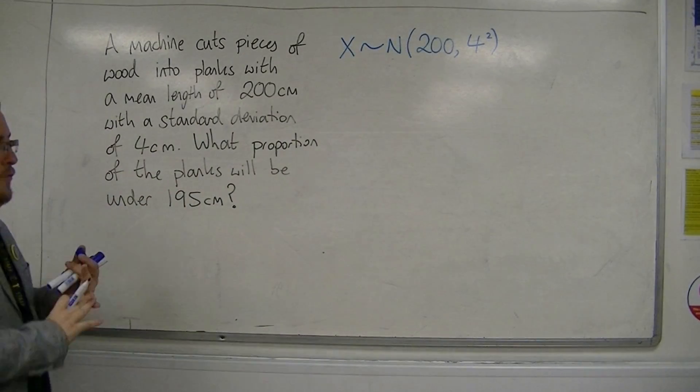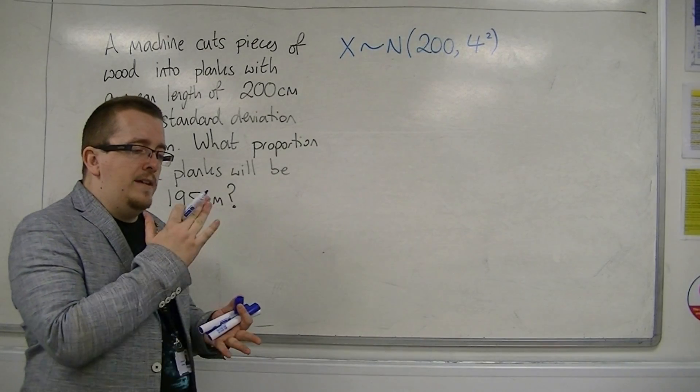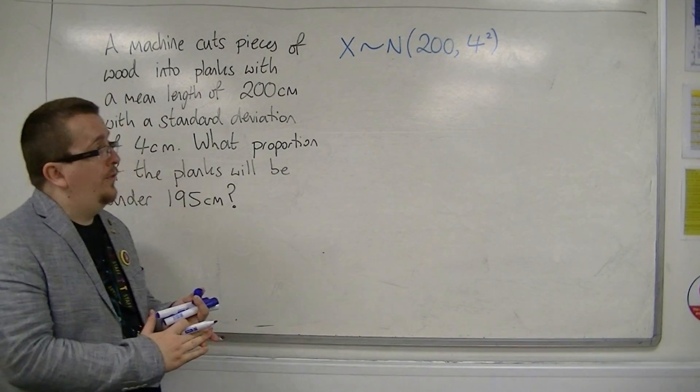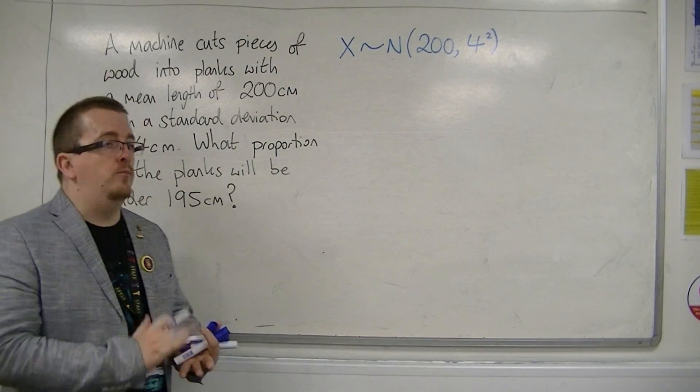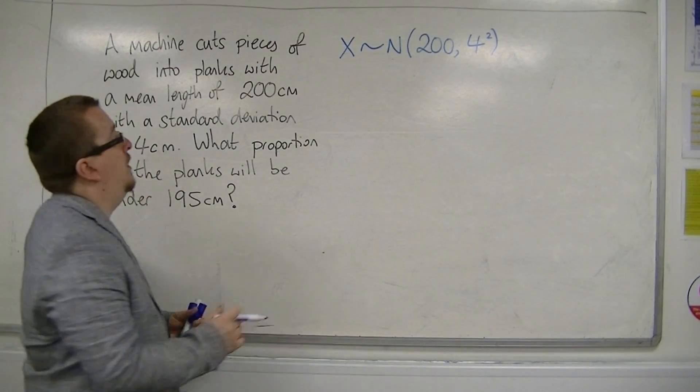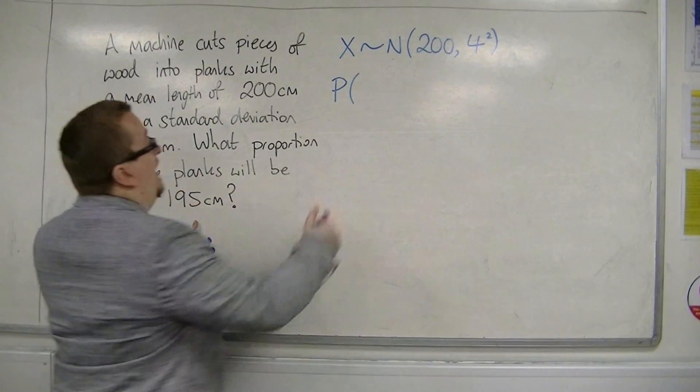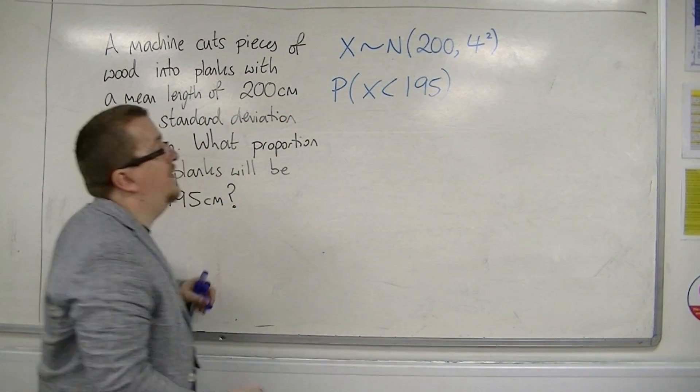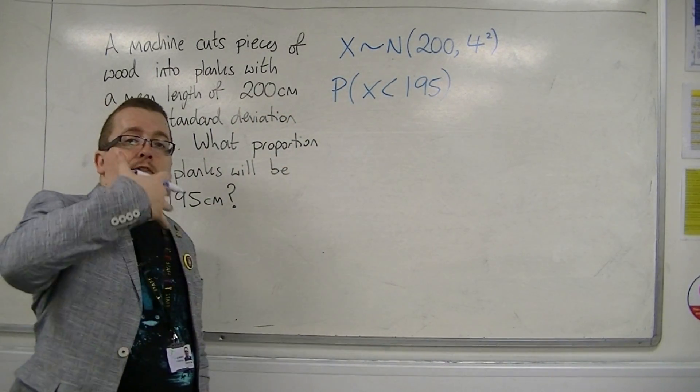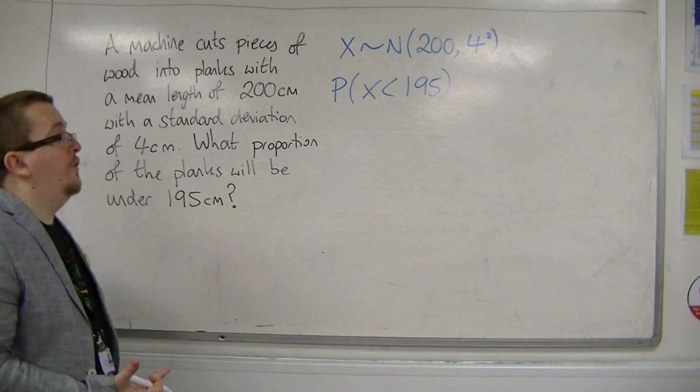Now, beforehand, I showed you that we need to use the standardized normal distribution in order to solve these problems. So, although we're looking for the probability of X being less than 195, I need to get this into the format of using Z, the standardized normal. So the Z statistic, as it's often referred.